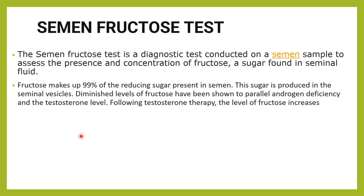What is fructose? It is a sugar which is produced by the seminal fluid. Around 99% of the reducing sugar present in semen is composed of fructose. This fructose is produced by the seminal vesicle. Why do we need this sugar? Because of energy — this fructose gives energy to the sperms.